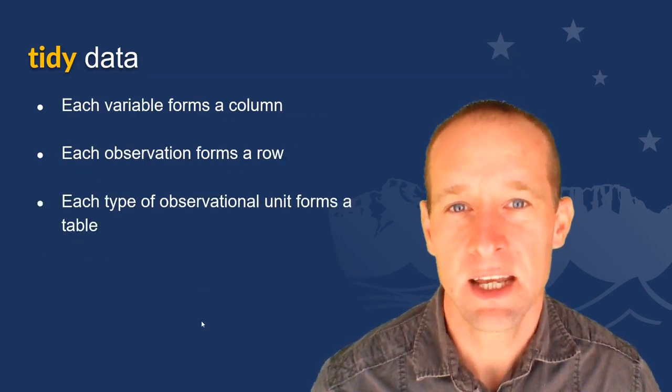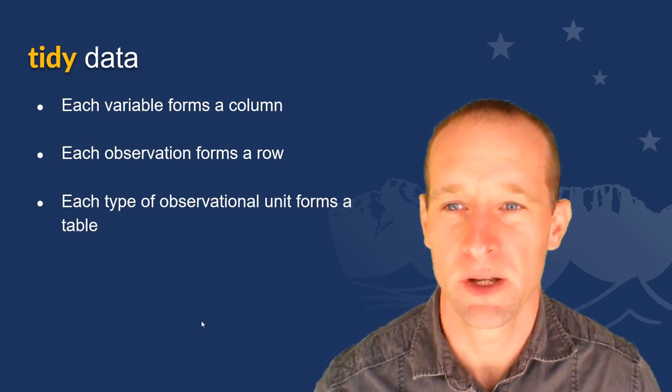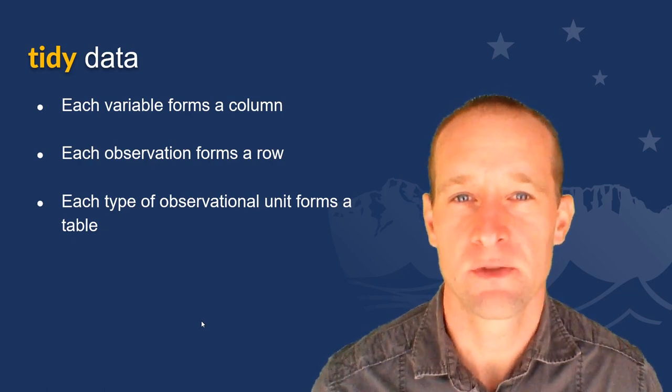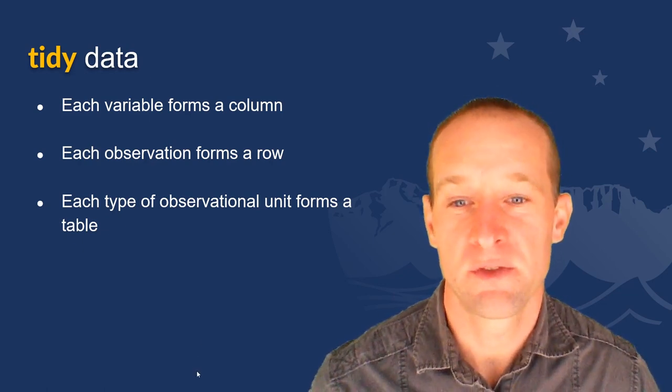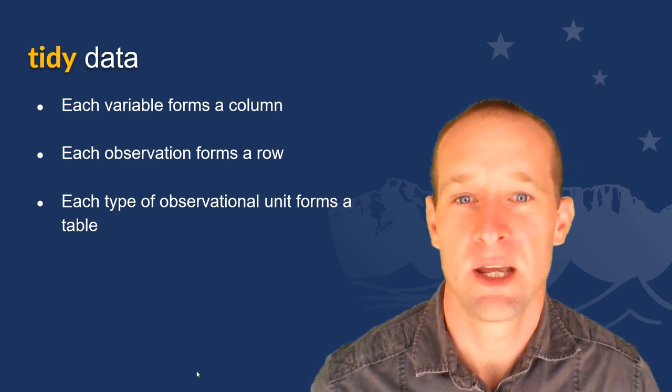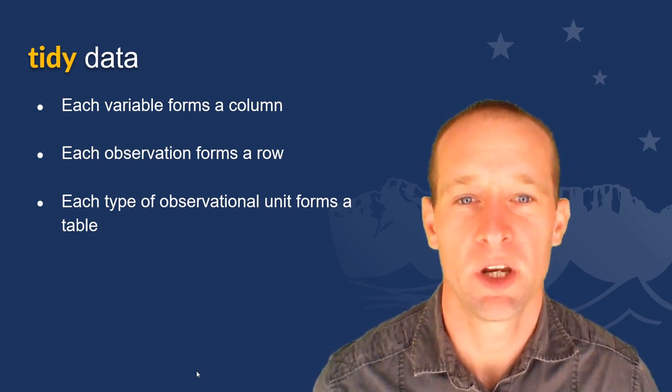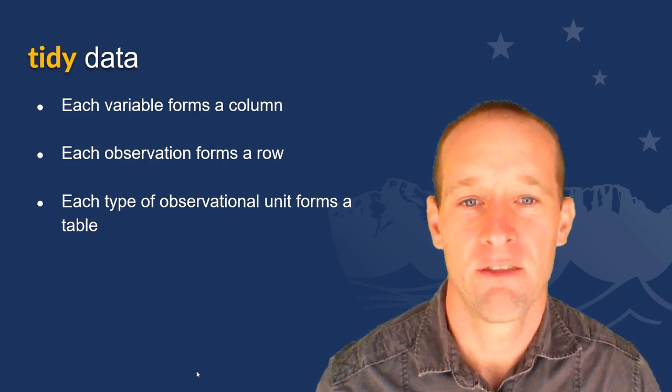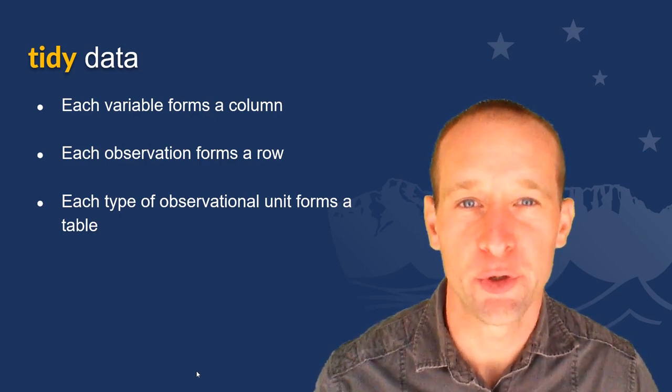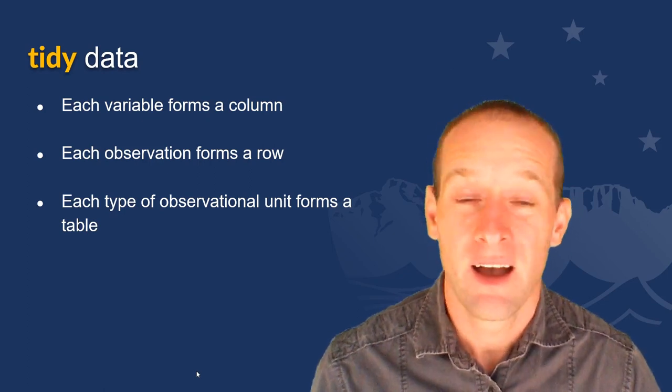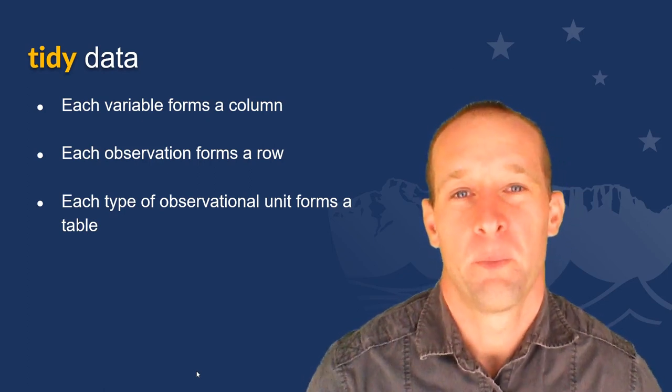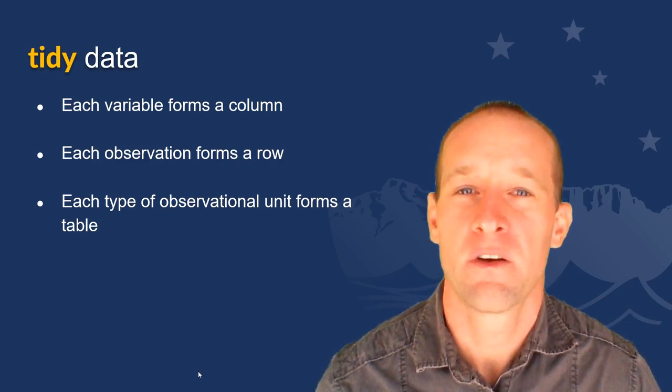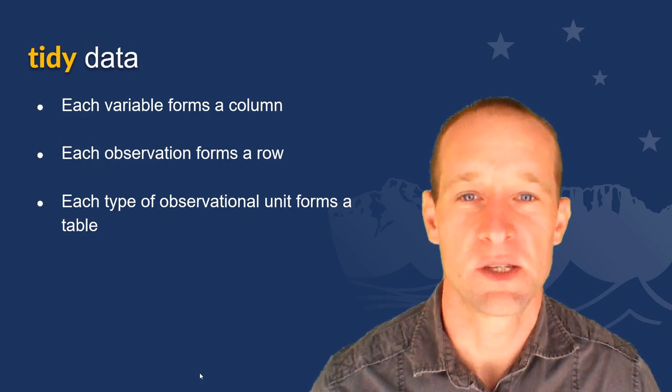The philosophy of tidy data can be broken down into three basic points. Each variable will form a column, each observation will form a row, and each type of observational unit will form a table. It's very simple. We put each data set in a tibble, we put each variable in a column, and there we have it. And it doesn't seem like anything new or groundbreaking, and you're probably saying, but Dylan, I already do this. But it's very easy to lose sight of all this. We're going to work through some examples, and I think you'll find that you're guilty of quite a few of these practices.